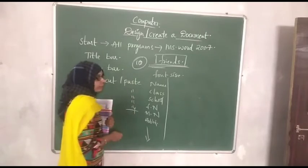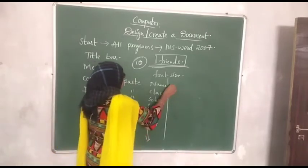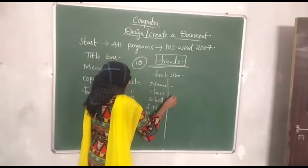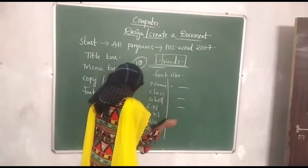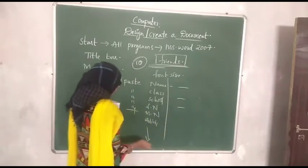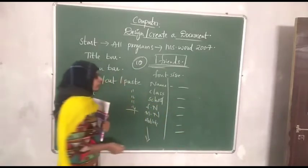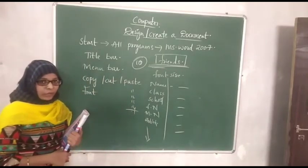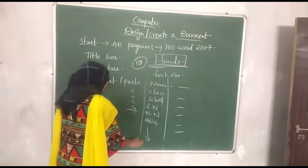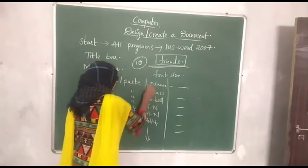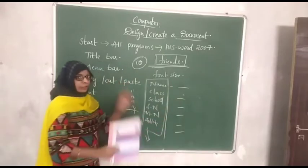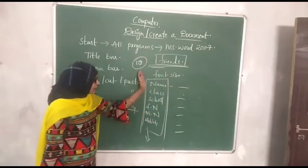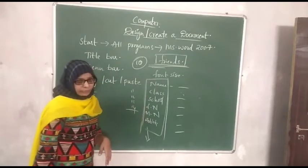So you have written the fields: Friends Name, Class, School, Father's Name, Mother's Name, Hobbies, etc. Now you need the same for your other 9 friends too. Will you write all of this again? No. First write all these things without filling details, then using the mouse, click here and drag till the last line to select all that content.